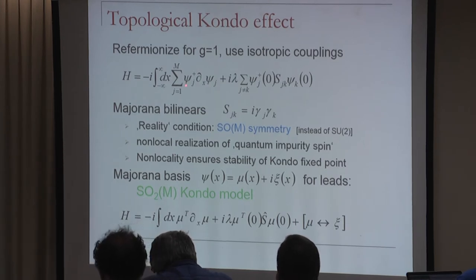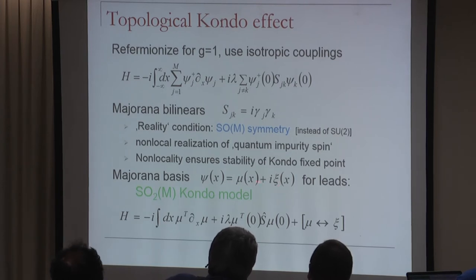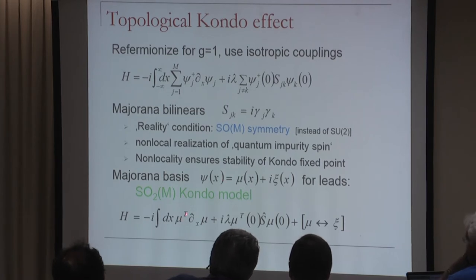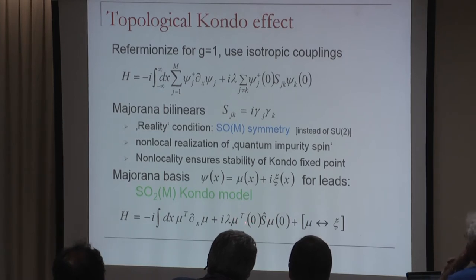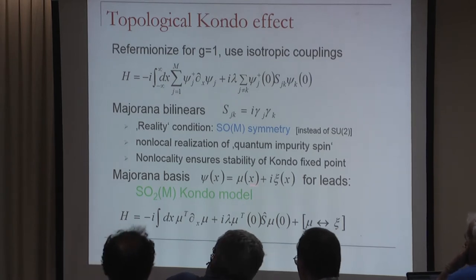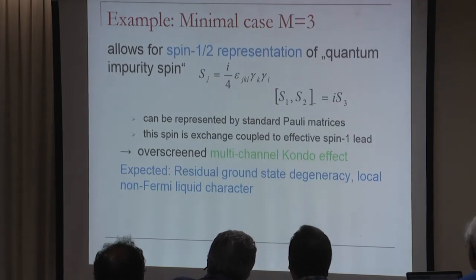For M=3, SO(3) is closely linked to SU(2), so one can find a spin-1/2 representation. Instead of S_JK, one defines a quantum impurity spin operator with components S_X, S_Y, S_Z using the epsilon tensor—for instance S_X ~ i gamma_2 gamma_3—and these satisfy the standard spin-1/2 algebra: [S_1, S_2] = i S_3 and cyclic permutations. So for M=3 we have a spin-1/2 degree of freedom and three leads. Three spinless leads correspond to effective spin-1, giving a spin-1/2 talking to spin-1.